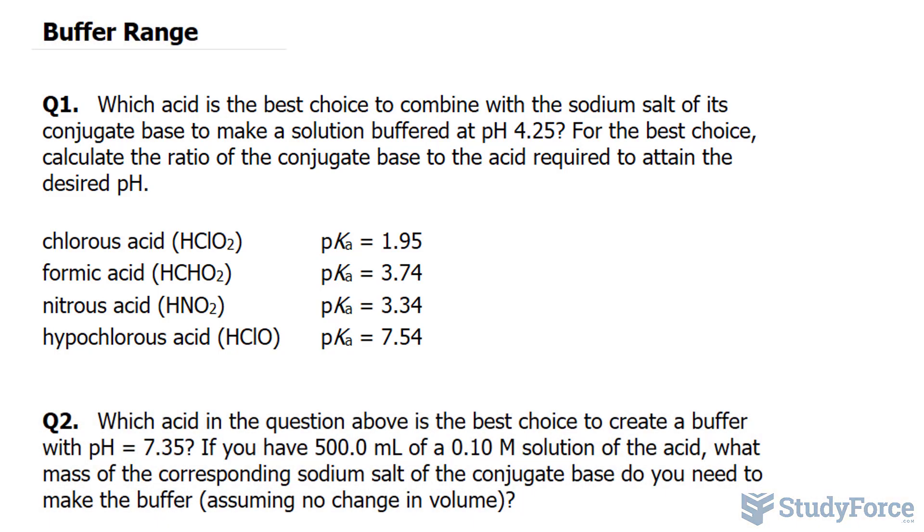So we have four acids here, and I'll write down the Henderson-Hasselbalch equation because we'll need it to answer this. Where pH is equal to pKa plus log of the base concentration over the acid concentration. And what we're actually looking for is this ratio. So at some point we need to solve for what's inside of this log. The acid that you choose must be the one whose pKa is closest to 4.25. So the closest one to 4.25 is formic acid.